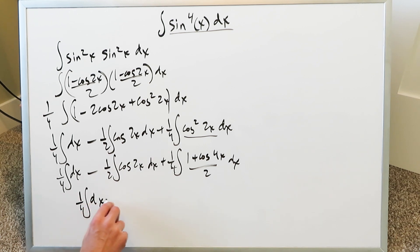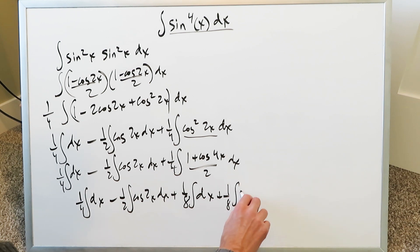We have 1 over 4 integral dx minus 1 over 2 integral cosine 2x dx plus 1 over 8 integral dx plus 1 over 8 integral cosine 4x dx. I'm getting these 1 over 8's from 1 over 4 multiplying with 1 over 2. I have a composite here. I have a composite here.